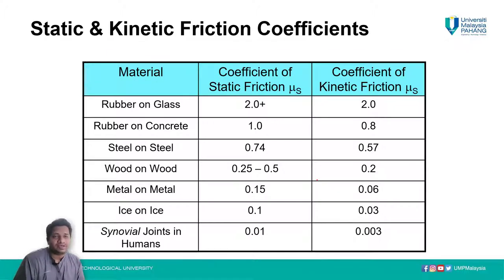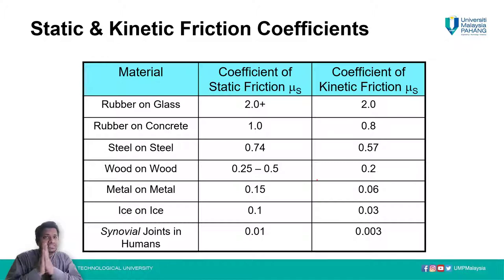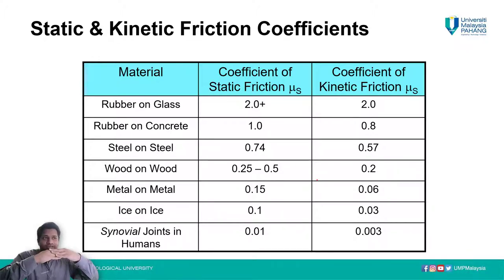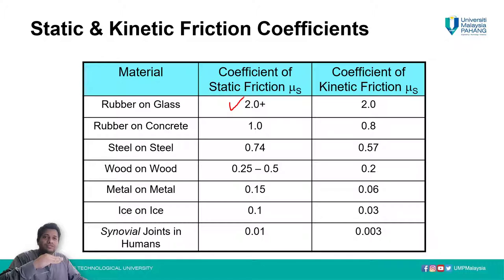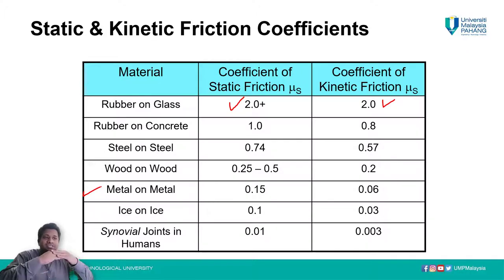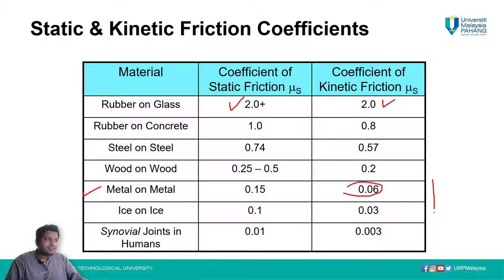Different types of materials interacting with each other have different friction coefficients — one static, one kinetic. For example, rubber on glass: to initially start movement, the static coefficient of friction equals 2, and once moving it remains at 2. For metal on metal, the static friction is 0.15, but after it starts moving the friction reduces significantly to about 0.006 — very low. If plotted on a graph of friction coefficient versus time, the initial high static region drops to the much lower kinetic value.